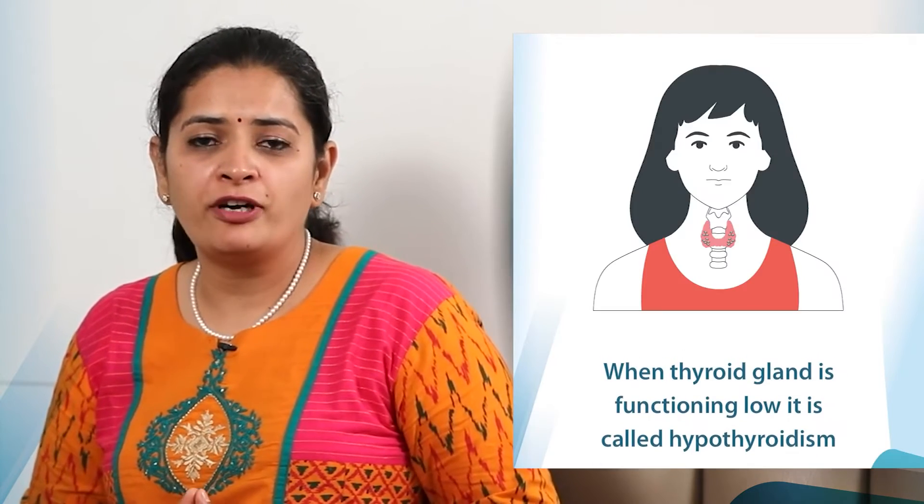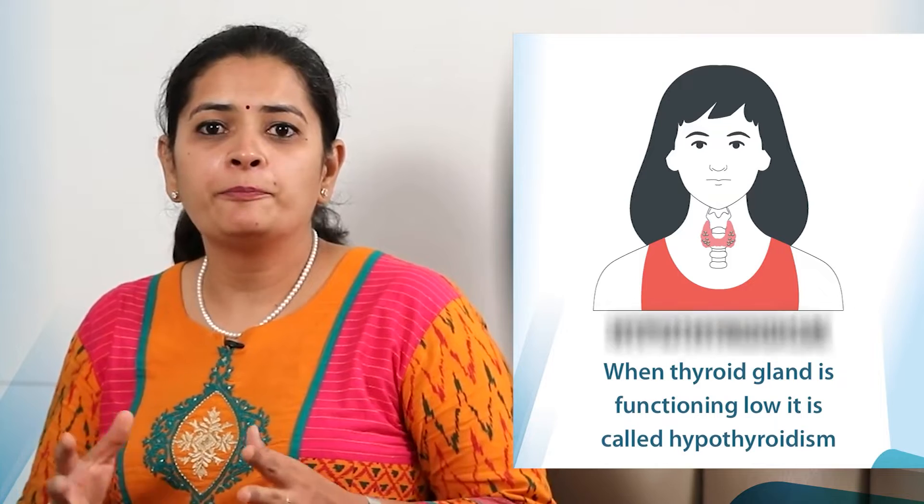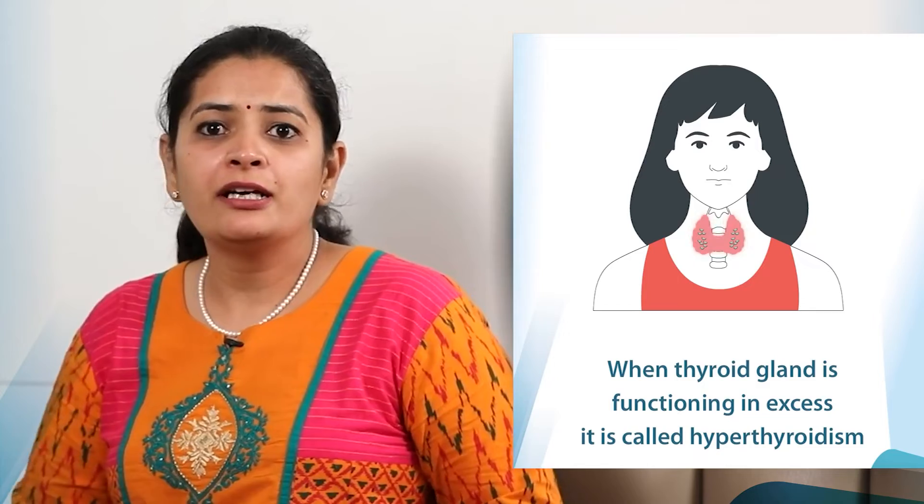Let's go to the topic of today — thyroid levels, the hypos and hypers of it. When the thyroid gland is functioning low, we call it hypothyroidism. And if the thyroid gland is functioning in excess, we call it hyperthyroidism. Fortunately, with the advances of science, it is very easy to detect any abnormality in thyroid function or the structure of the thyroid gland.